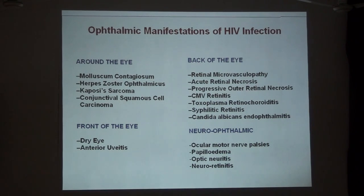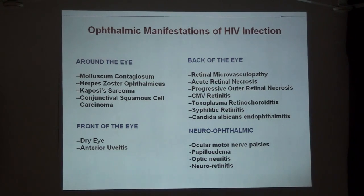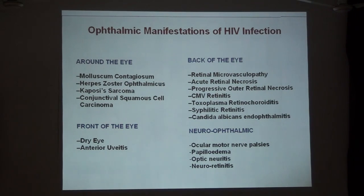In the anterior segment, there are features of dry eyes and anterior uveitis. In the posterior segment, there are many conditions: microvasculopathy, acute retinal necrosis, progressive outer retinal necrosis, cytomegalovirus retinitis, toxoplasma retinochoroiditis, syphilitic retinitis, and fungal endophthalmitis including Candida albicans endophthalmitis. In the neuro-ophthalmic category, there are several ocular motor nerve palsies, papilledema, optic neuritis, and neuroretinitis.